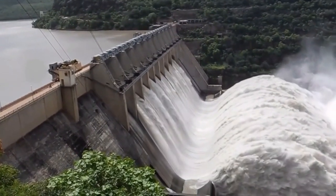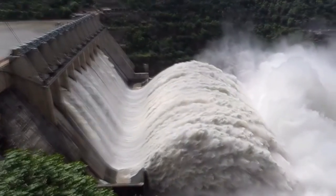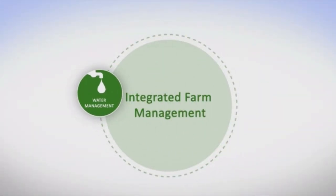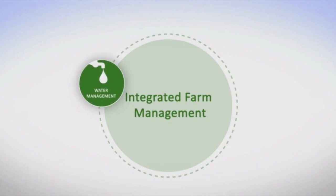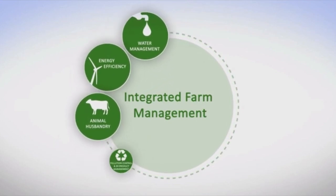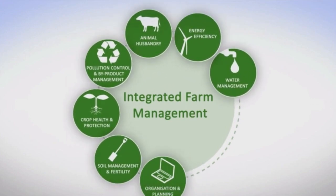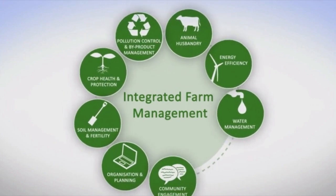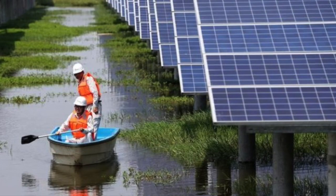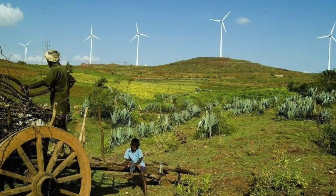Water is a key resource for everyone, especially farmers. In sustainable agriculture, farmers often store rainwater in reservoirs to use for irrigation of crops. Energy management is essential, and with time, farmers have started depending less on fossil fuels and more on renewable sources of energy such as solar panels and windmills.